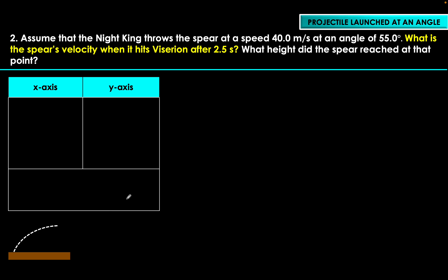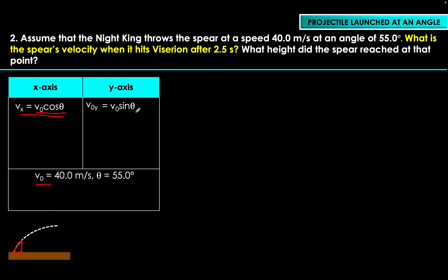This is the trajectory of our projectile — the spear thrown by the Night King. The initial velocity is 40.0 meters per second at 55.0 degrees. That initial velocity has an x-component calculated using v-naught cosine theta, and we may also need the initial vertical velocity, which is v-naught sine theta. We're concerned with the velocity at 2.5 seconds, so that's the time we'll use. The required to find is the velocity at time equals 2.5 seconds.